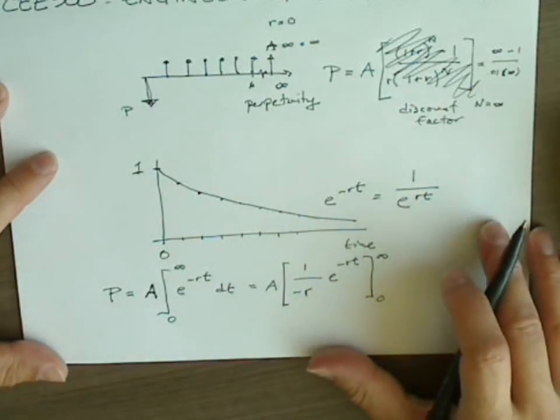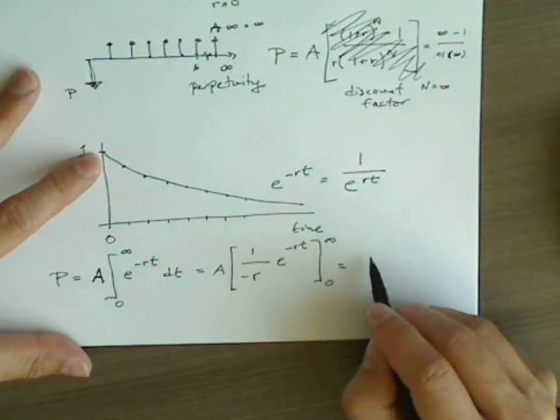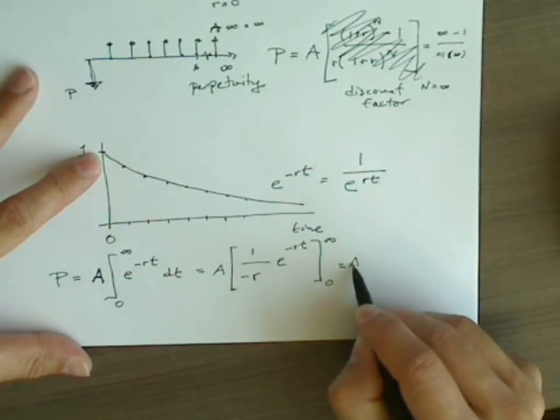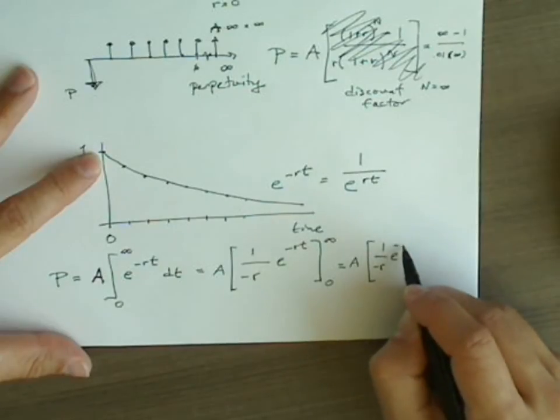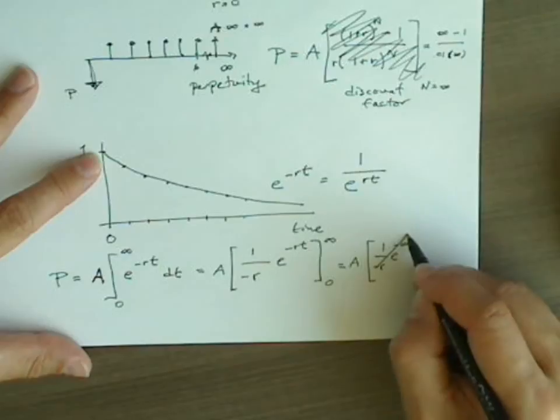It's the evaluation where the problem becomes much more simple. Well, first, we have to plug in infinity. And we'll get A, 1 over negative R, e to the negative infinity. Because e to the negative R times infinity, well, that's just going to be equal to 0.